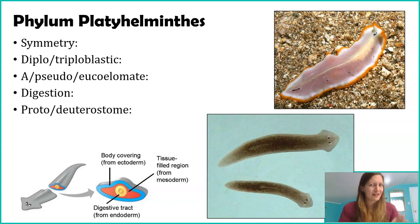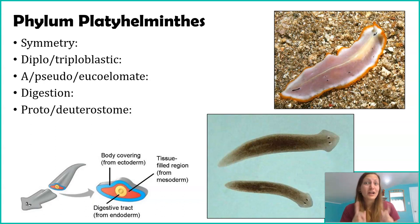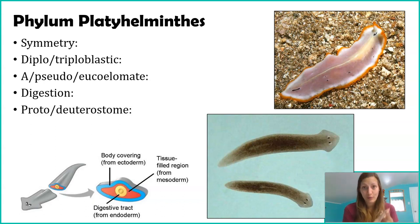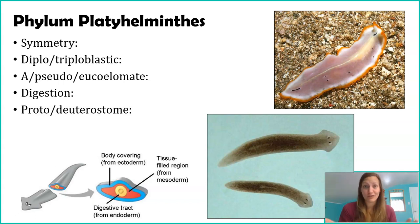But Platyhelminthes is odd. They almost evolved backwards, which we do see a lot in evolutionary history. They actually have incomplete digestion — they only have one opening that serves as both the mouth and the anus, meaning we cannot use the term proto- or deuterostome for them.